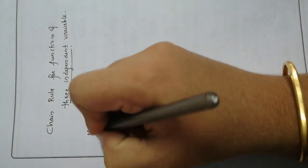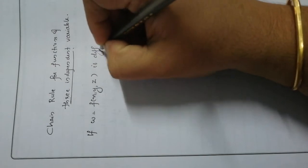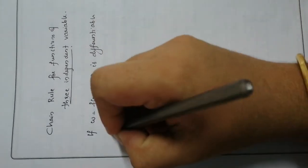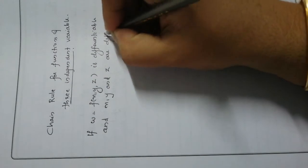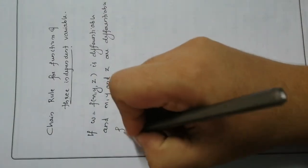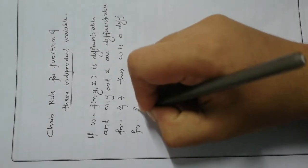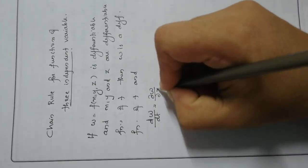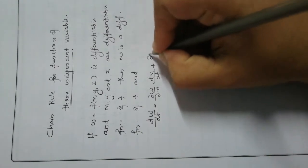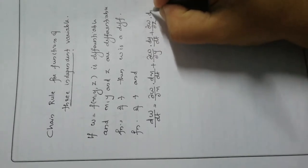The statement is: if w = f(x, y, z) is differentiable, and x, y, and z are differentiable functions of t, then w is a differentiable function of t and we can find dw/dt. The formula is: dw/dt = (∂w/∂x)(dx/dt) + (∂w/∂y)(dy/dt) + (∂w/∂z)(dz/dt).